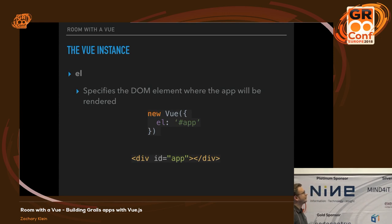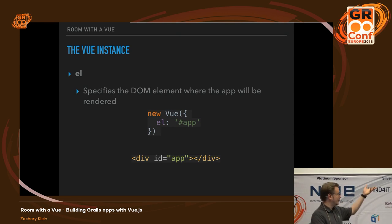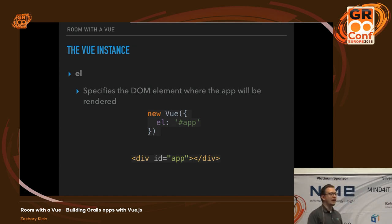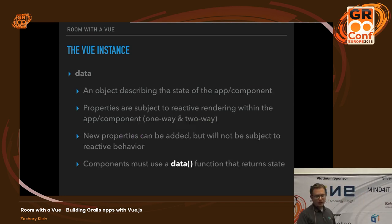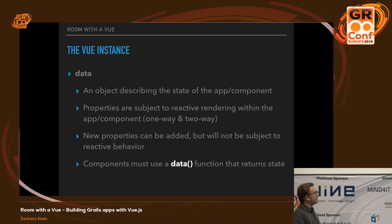The first obvious property is 'el' — element. It's just telling Vue where to render its template. Typically you'll have a div that represents your app and you'll render your components starting at that point. If you've done anything with React, this is very similar to how that works with the ReactDOM render call — you just give the framework somewhere to start and it takes over from there. Probably one of the most interesting properties of a Vue instance is 'data'. Data is simply where internal state for the Vue instance is stored, and that includes components, so at this point those terms are almost interchangeable.